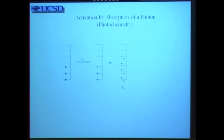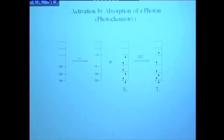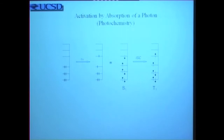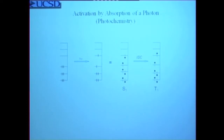If light is absorbed in this system, one electron is promoted from the highest occupied orbital to the lowest unoccupied orbital. So you can see that an excited state has a vacancy in what was filled, and it has an extra electron in an orbital which was empty.